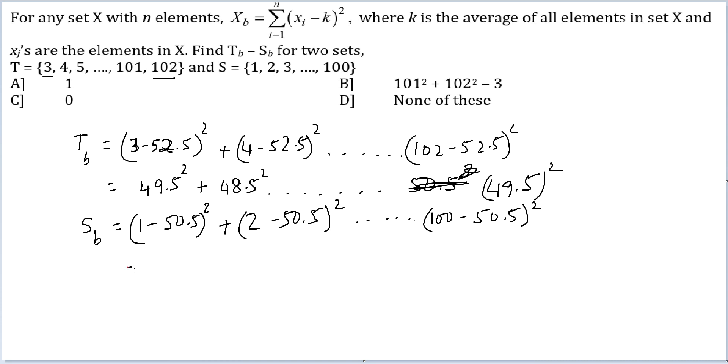When I open these terms up, I will get 49.5 whole square plus 48.5 whole square, till 49.5 whole square. So if you see, T_D and S_D will be equal.